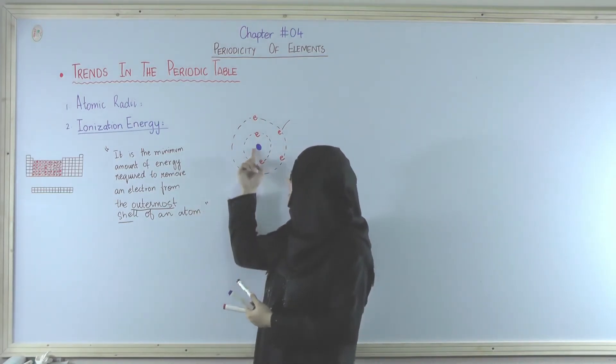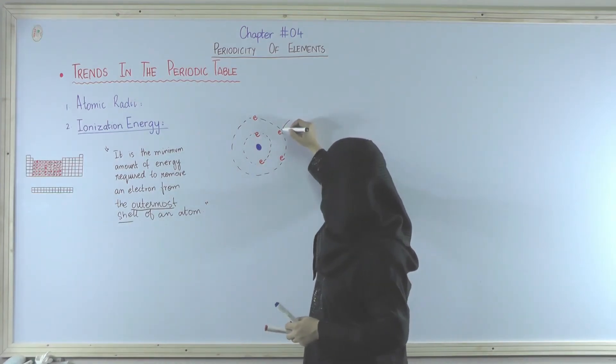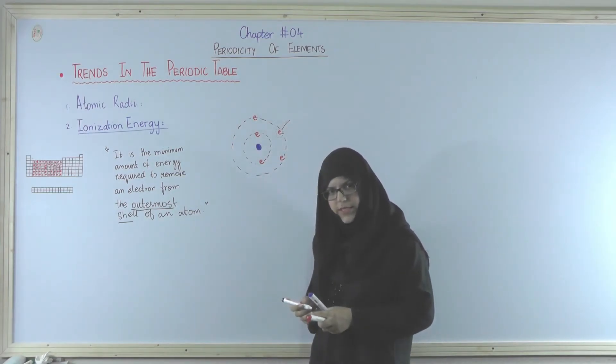Kyun? Kyunke uspe force zyada lagi hui hai nucleus ki. So now in this case the outermost shell electron, let's suppose if we want to take out this electron from the outermost shell.